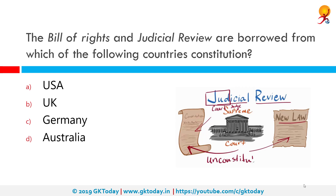The Bill of Rights and Judicial Review are borrowed from which of the following countries' constitution? The correct answer is USA. In the United States, the Bill of Rights comprises the first ten amendments to the United States Constitution, and Judicial Review is a process under which executive or legislative actions are subject to review by the judiciary. The same is applicable to India.